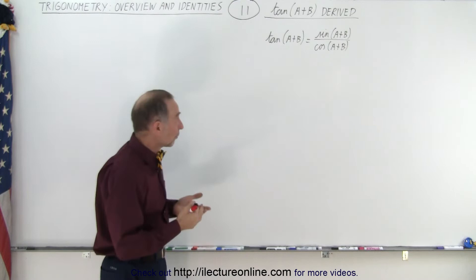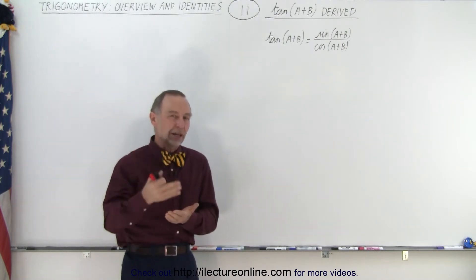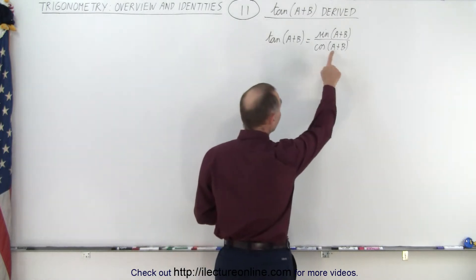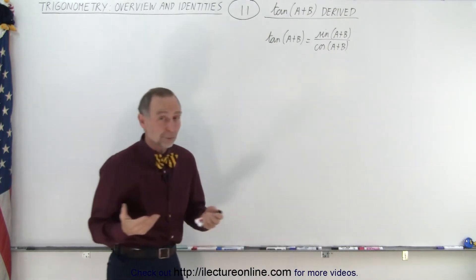And of course, if we start with the tangent, we can define that as the ratio of the sine over the cosine. And since we already found the sine of the sum of two angles and the cosine of the sum of two angles,